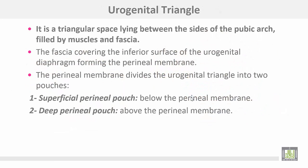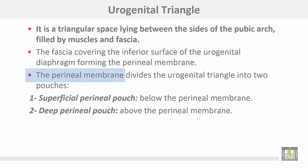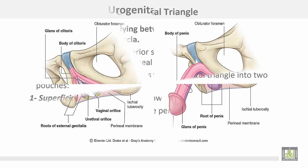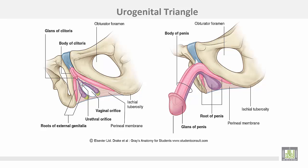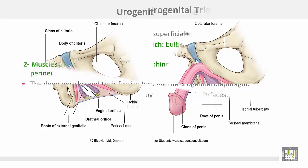The urogenital triangle is a triangular space lying between the sides of the pubic arch, filled by muscles and fascia. The fascia covers the inferior surface of the urogenital diaphragm, forming the perineal membrane. The perineal membrane divides the urogenital triangle into two pouches: the superficial perineal pouch below the perineal membrane, and the deep perineal pouch above the perineal membrane.